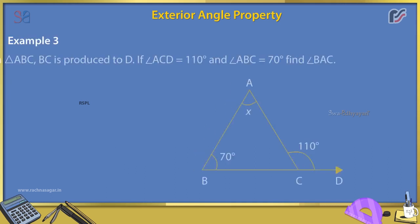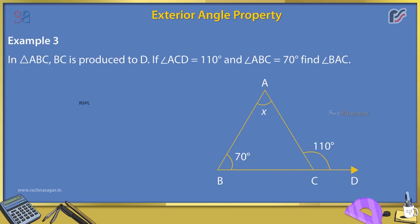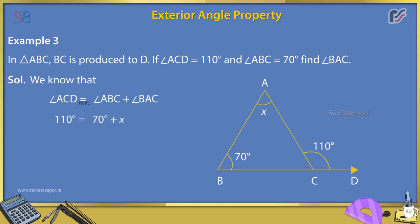Example 3: In triangle ABC, BC is produced to D. If angle ACD = 110° and angle ABC = 70°, find angle BAC. Solution: Using the exterior angle property, angle ACD = angle ABC + angle BAC. So, 110° = 70° + x, giving x = 110° − 70° = 40°. Therefore, angle BAC = 40°.